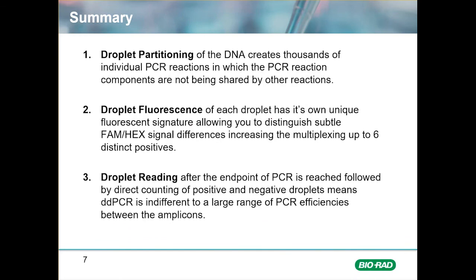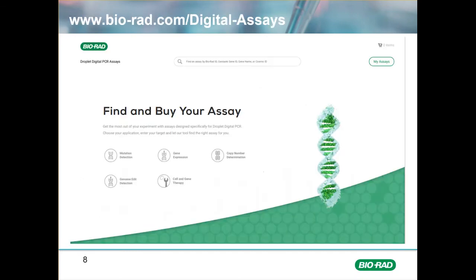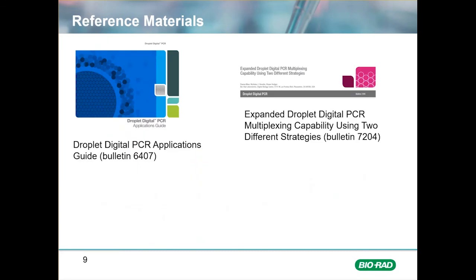In summary, easy and robust multiplexing is a compelling reason to use droplet digital PCR. Thousands of partitions per sample prevent competition for PCR resources and allow for many fluorescent signatures in a single sample. Reading droplets at endpoint ensures that every assay on each sample will be quantified. For best results, we recommend visiting the Bio-Rad Digital Assays website, where you can design and purchase assays specifically designed for ddPCR. For additional reading on multiplexing and other topics, look up the Droplet Digital PCR Applications Guide Bulletin 6407 and Bulletin 7204. Thank you for your time.